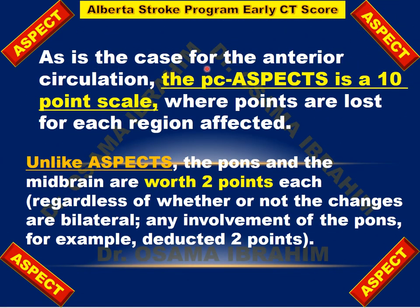As is the case for the anterior circulation, the PC-ASPECTS is a 10-point scale where points are lost for each region affected. However, unlike ASPECTS, the pons and the midbrain are worth 2 points each, regardless of whether involvement is unilateral or bilateral. This is the key difference between ASPECTS and PC-ASPECTS in calculations.